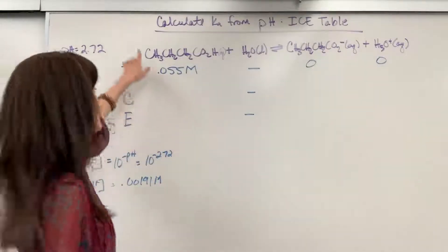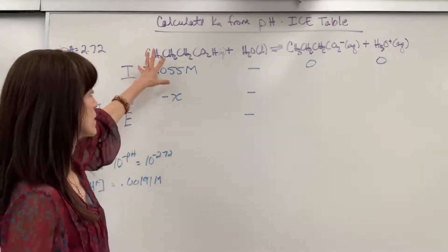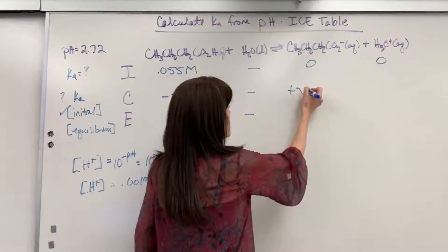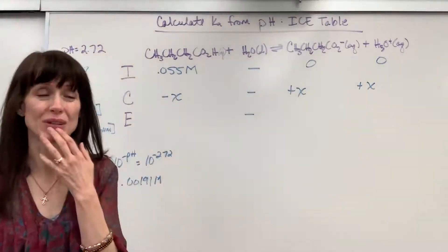Now change. So I'm looking at those coefficients. We're going to lose an amount of the butanoic acid. And for every one mole that I lose, I'm going to gain one mole of the butanoate and one mole of that hydronium ion.